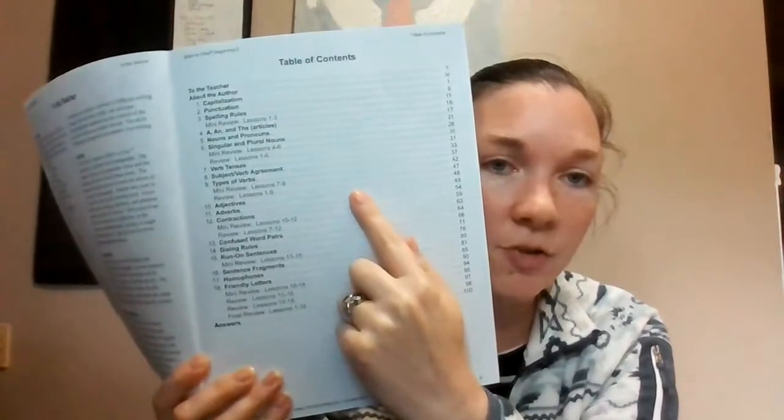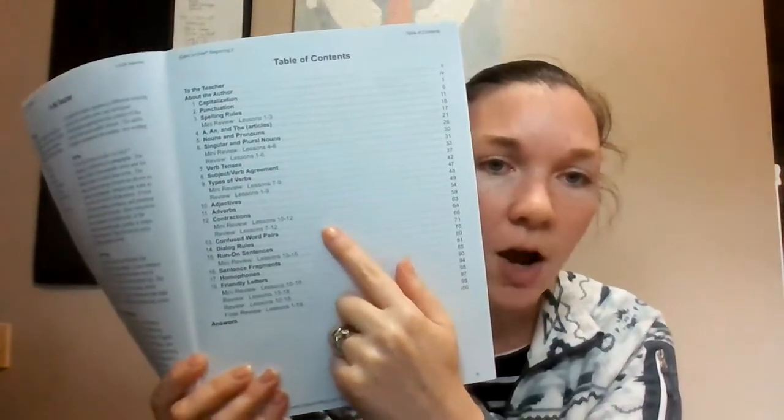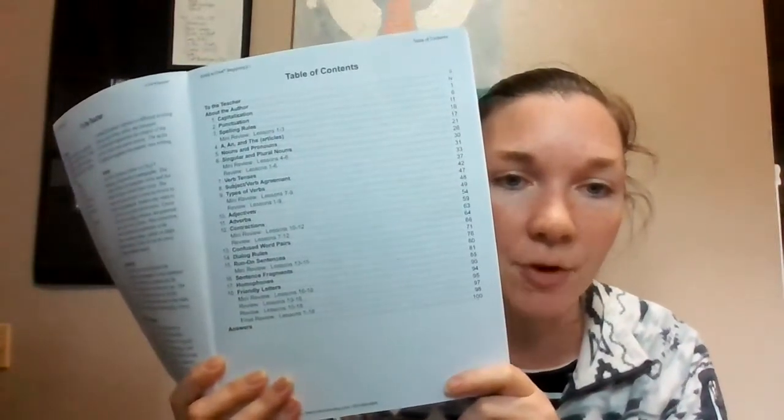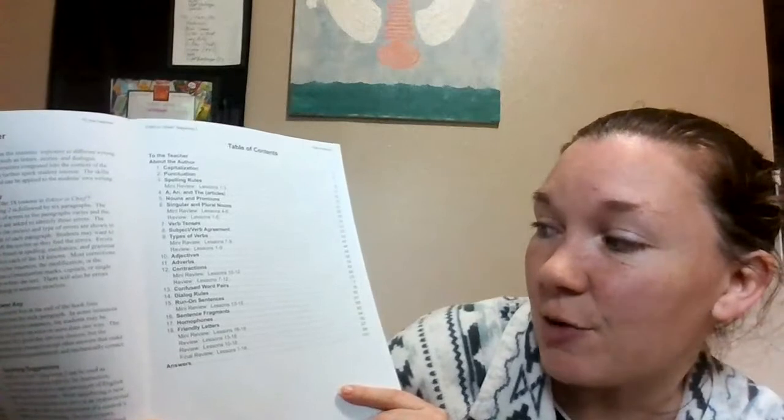So it covers capitalization, punctuation, spelling, articles, nouns, pronouns, singular and plural, verb tenses, subject-verb agreement, types of verbs, adjectives, adverbs, compound words, contractions, confused-word pairs, dialogue, rules, run-on sentences, sentence fragments, homophones, and then Friendly Letters. And then throughout, there are many reviews, and then there's a final review at the very end.